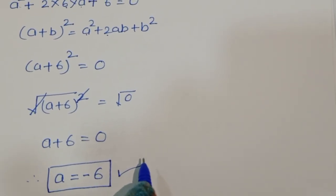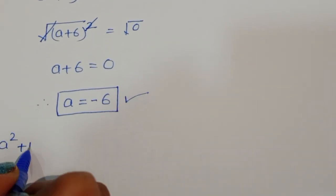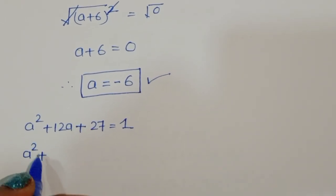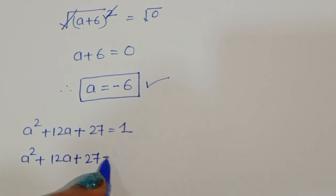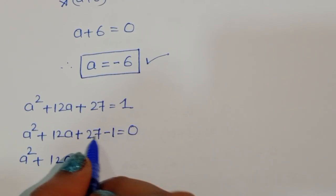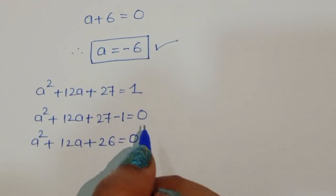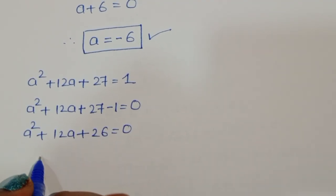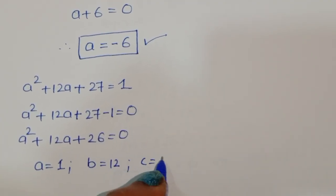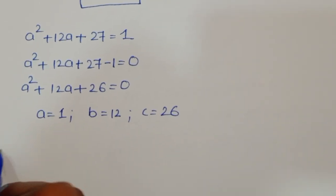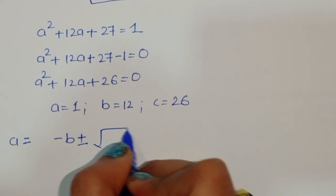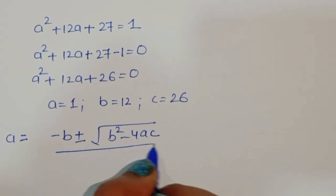Now we solve the second equation: A² + 12A + 27 = 1, which gives A² + 12A + 26 = 0. Here the coefficients are: a = 1, b = 12, and c = 26.